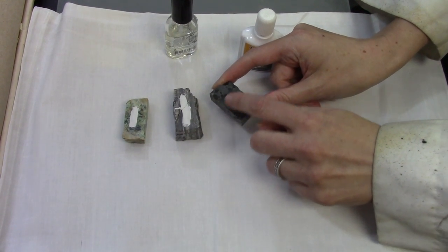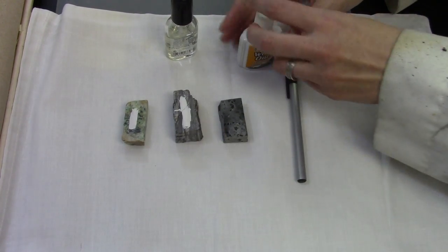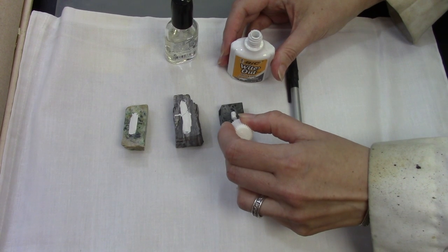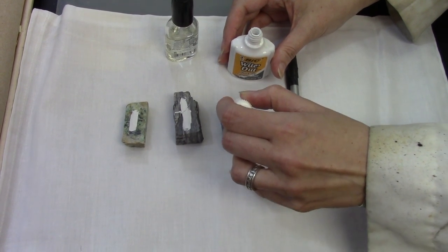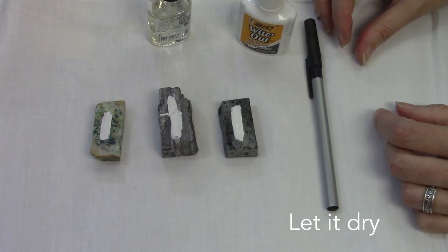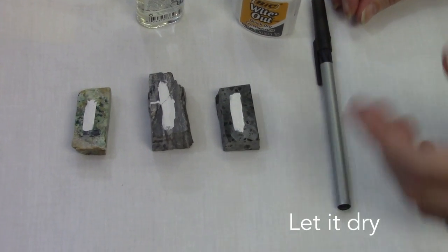For this rock, this is our polished side, so I'm going to turn it upside down from there and then put a strip of whiteout or liquid correction fluid or anything white like that that will dry on the surface there and then wait for it to dry.